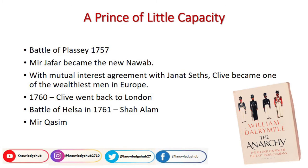When Clive went back to London, he became very popular and famous because of his achievement and also became a very reputable man. On the other side, Mir Jafar became the emperor, but Mir Jafar wasn't a very competent leader, so people weren't very happy with him and started rebellion. That's why the name of this chapter is 'A Prince of Little Capacity' — because Mir Jafar was basically a puppet, a puppet of Robert Clive and a puppet of Jagat Seth.